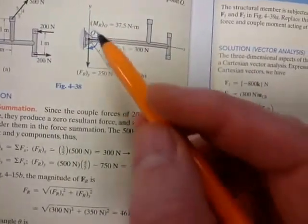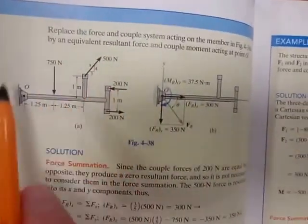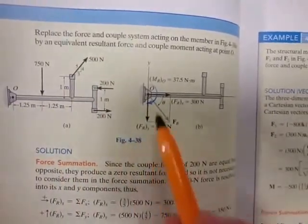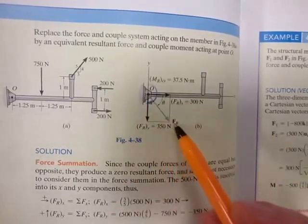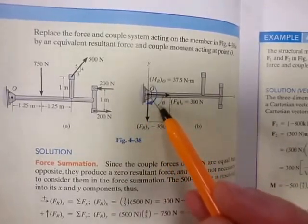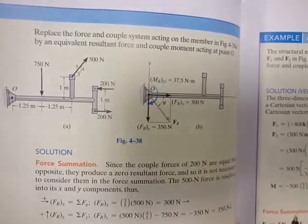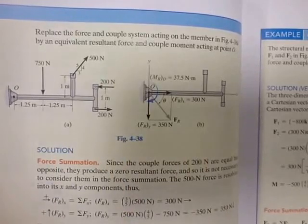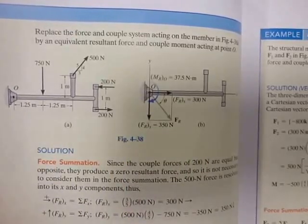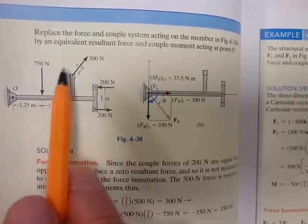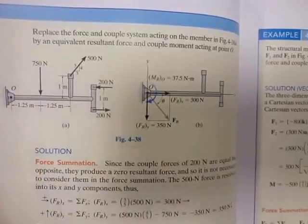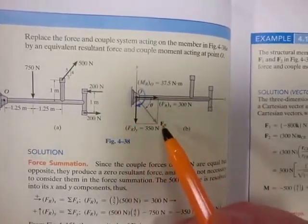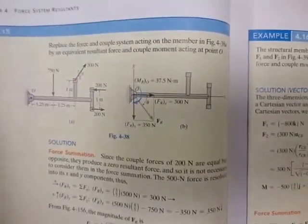So we take that and simply apply it there. This entire system of forces and couples is then replaced by an equivalent system: a resultant force of 461 Newtons at 49.4 degrees, plus a resultant couple moment of 37.5 Newton-metres clockwise acting at point O. All these forces and couples acting on the system have exactly the same external effect as this single force plus the couple. Hope that helps.